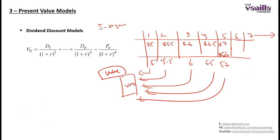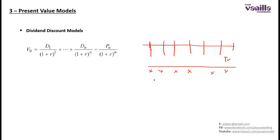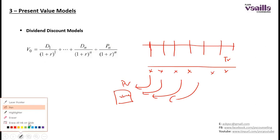Then I can calculate the present value of all of these and sum them up, and that will become the value. So value will be the sum of the present values of all future cash flows. You forecast all future dividends, add a terminal value at the end of the last forecasted year, calculate the present value of each, sum them up, and that gives you value.